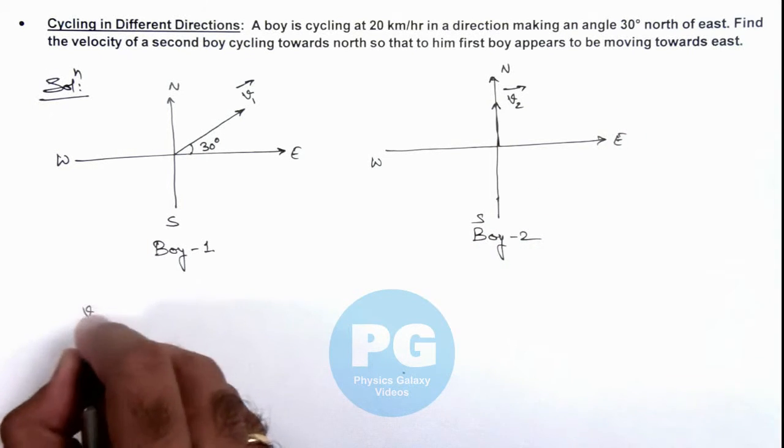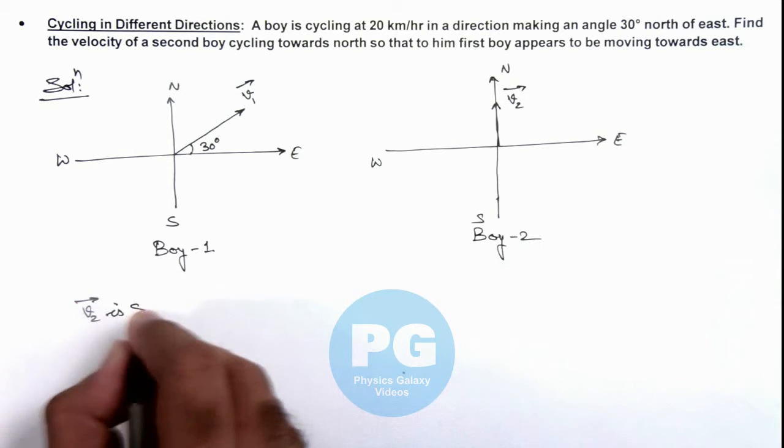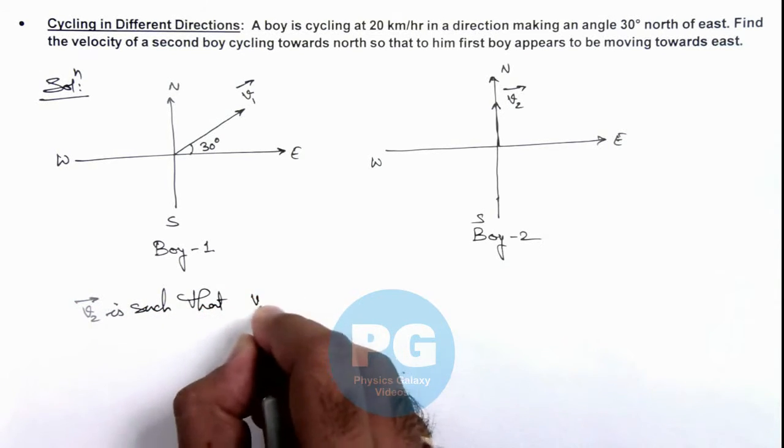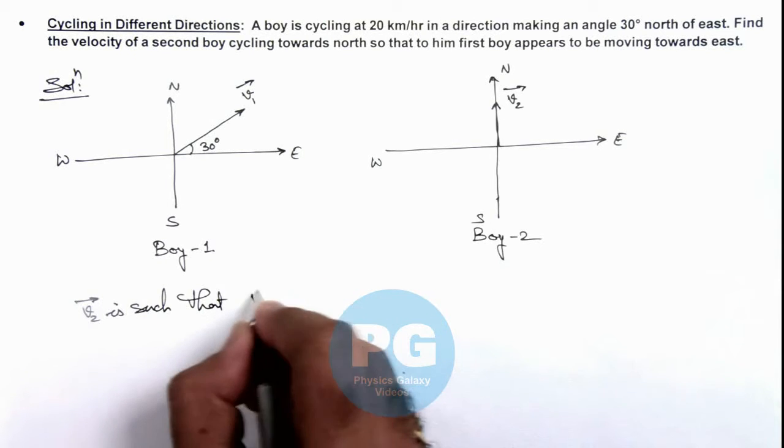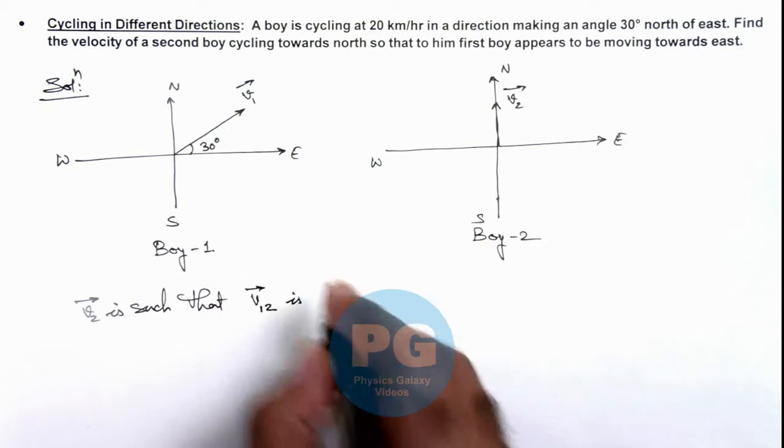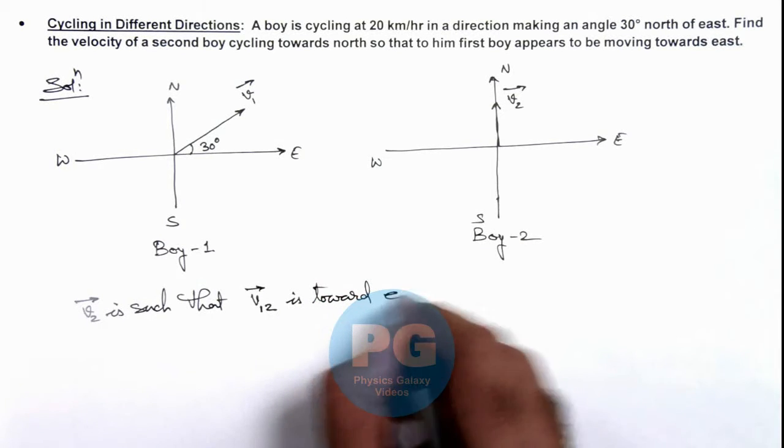So we can write v2 vector is such that velocity of 1 with respect to 2 vector, that is the velocity of boy 1 as seen by boy 2, is toward east.